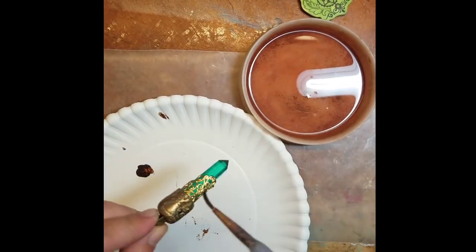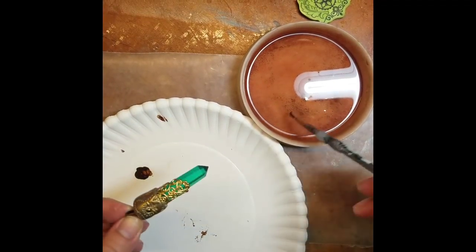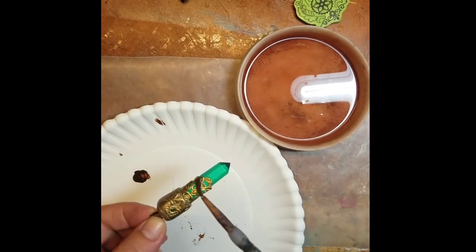So I'm just going to brush some onto the brass filigree, wipe it with a paper towel, and then I'll clean it thoroughly with a baby wipe.